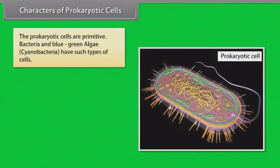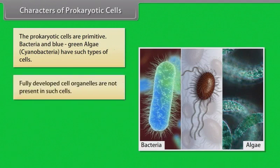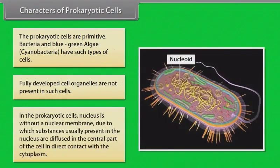Characters of prokaryotic cells: The prokaryotic cells are primitive. Bacteria and blue-green algae, that is cyanobacteria, have such types of cells. Fully developed cell organelles are not present in such cells. In prokaryotic cells, the nucleus is without a nuclear membrane, due to which substances usually present in the nucleus are diffused in the central part of the cell in direct contact with the cytoplasm.